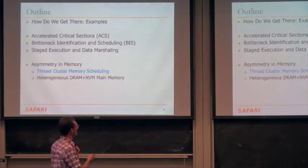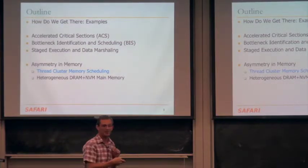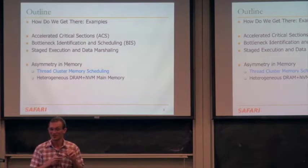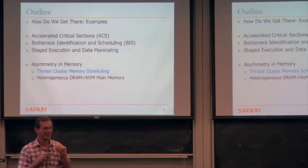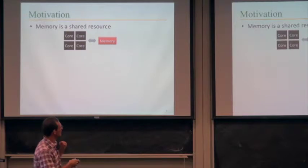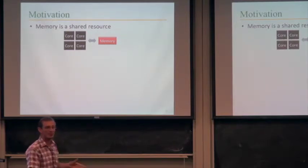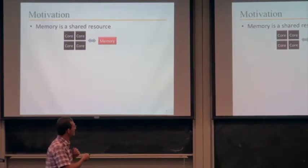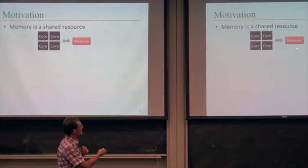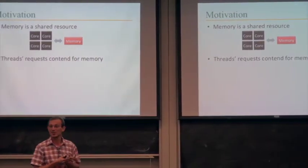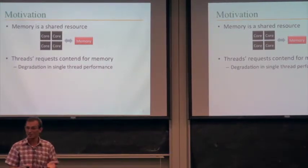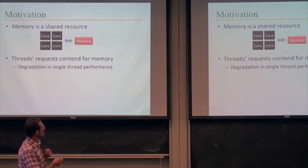A totally different topic in asymmetry: thread cluster memory scheduling. Memory is a shared resource, and you may have multiple cores or multiple threads contending for this memory. When these cores generate requests that need to access memory, there needs to be an arbiter — the memory controller. If that arbiter is not doing its job well, you can get significant degradation in single-thread performance.